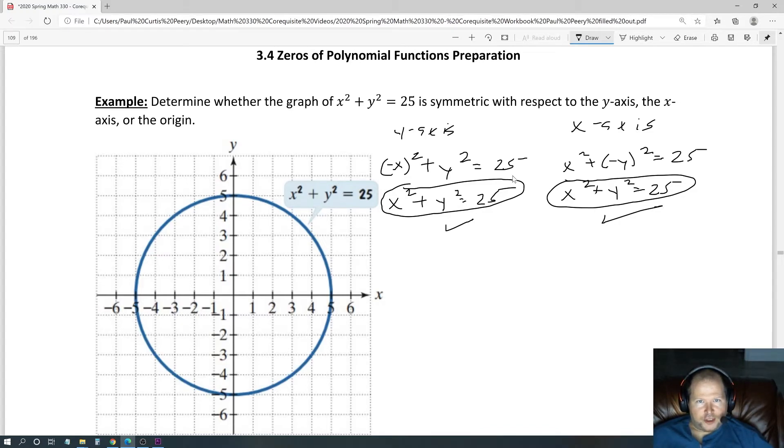And then at that point, we have the origin symmetry. What we do there is we plug in a negative x and square it, then plug in a negative y and square it, and then we have the 25. Negative x squared is x squared. Negative y squared is y squared. And we were able to get back the original one.